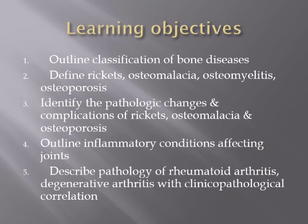We need to identify the pathological changes and complications of rickets, osteomalacia, and osteoporosis, and to outline the inflammatory conditions affecting the joints — their etiology, fate, and common systemic symptoms. Finally, to describe the pathology of rheumatoid arthritis with its clinical-pathological correlation, and how to differentiate between rheumatoid arthritis and osteoarthritis.